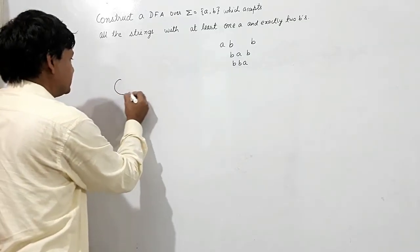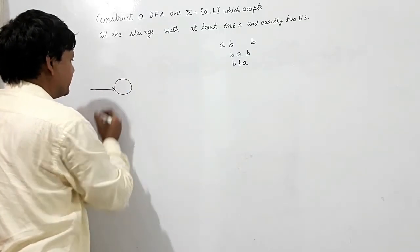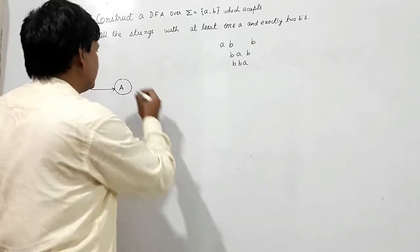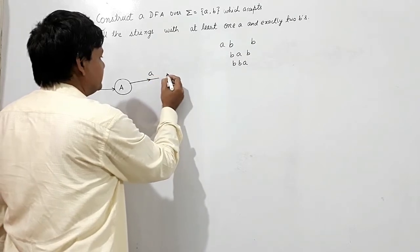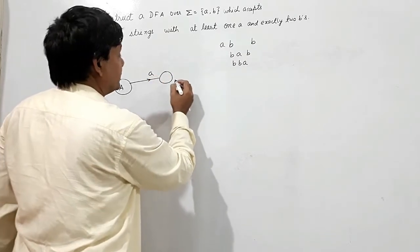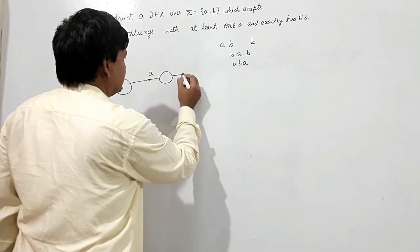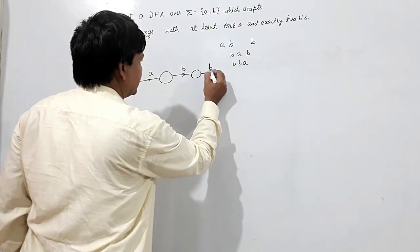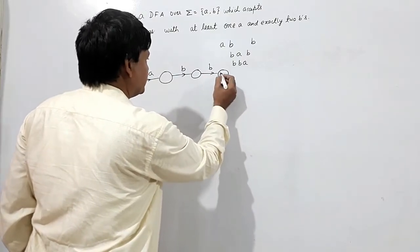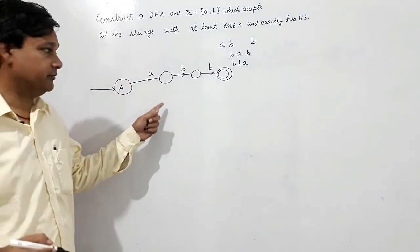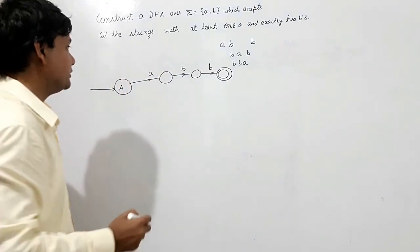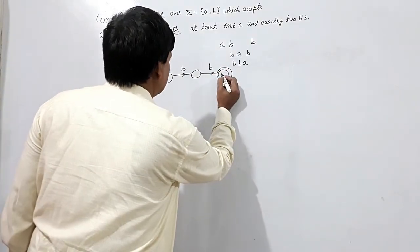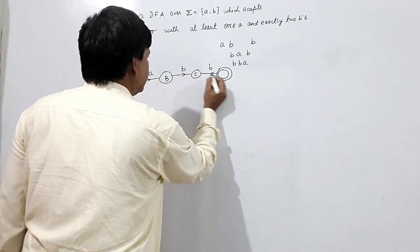So this is my initial state. I am using this case where there is one A followed by two B's — A, B, B — which should be accepted because there is one A and exactly two B's. So the states are A, B, C, D where D is the final state.